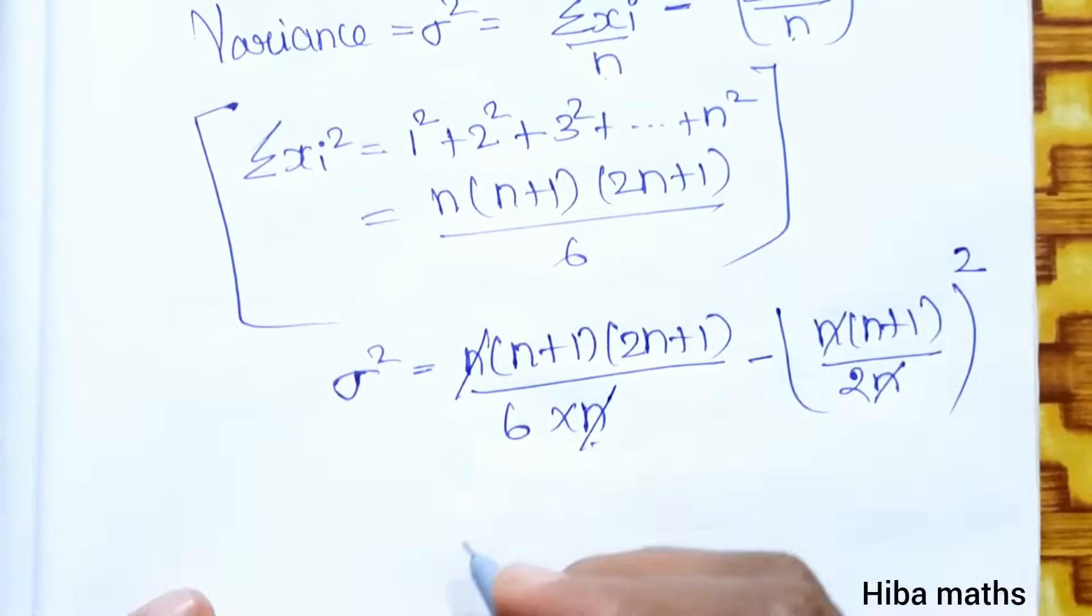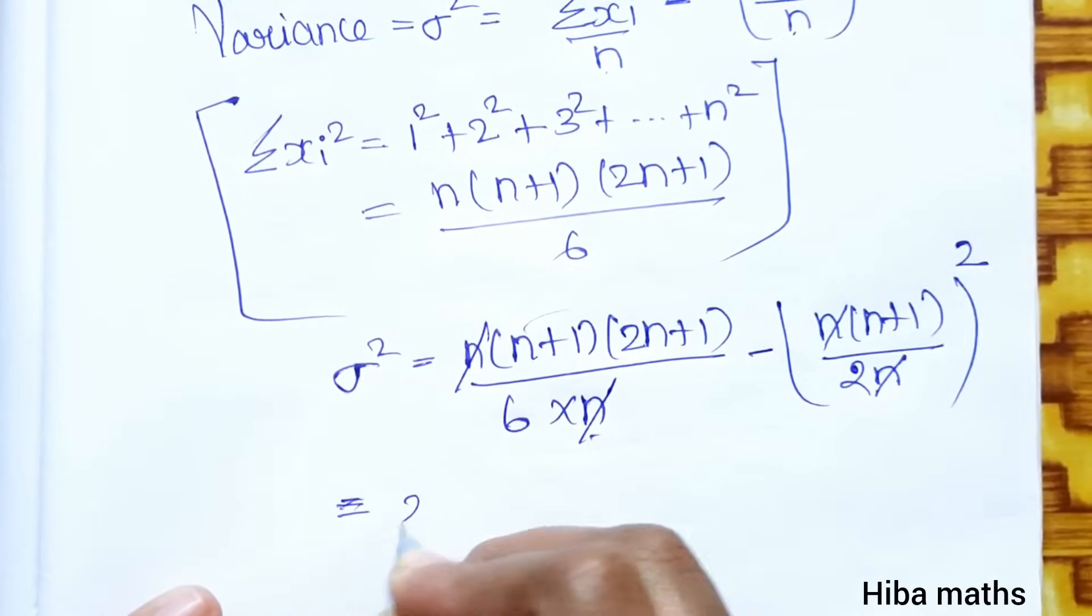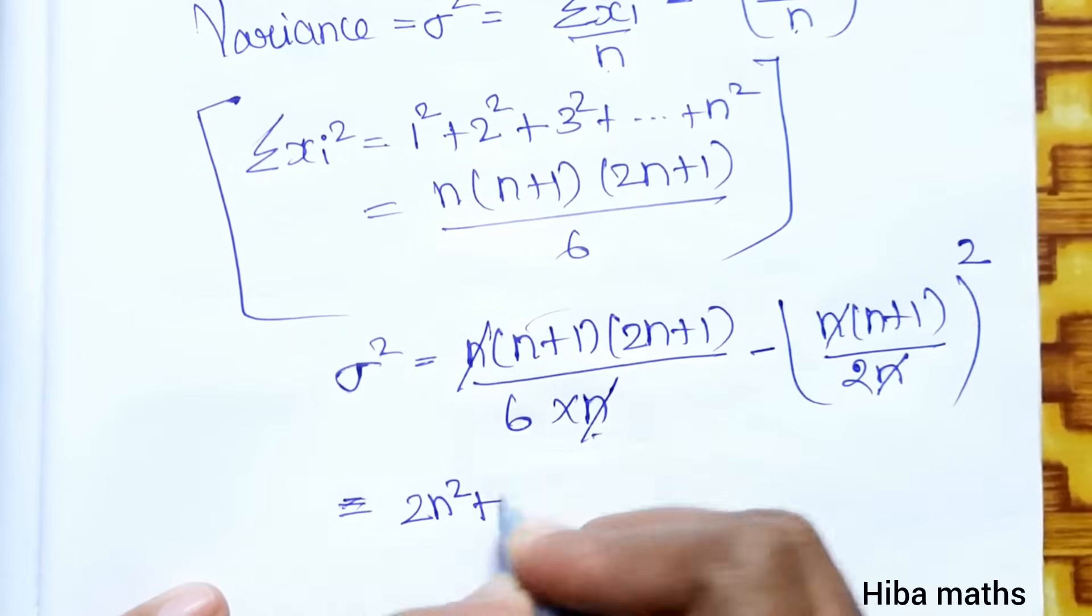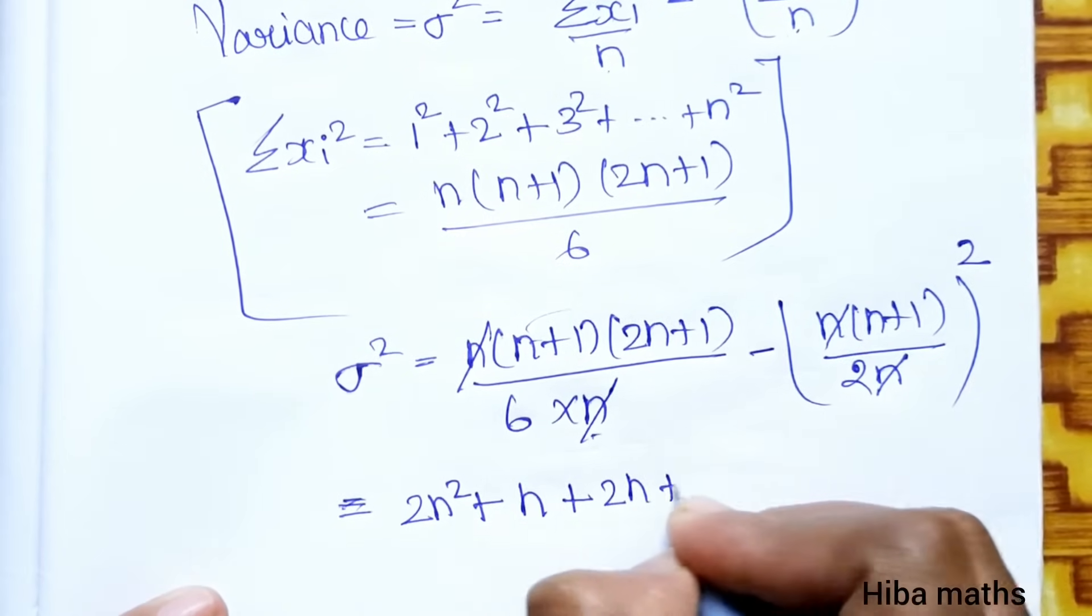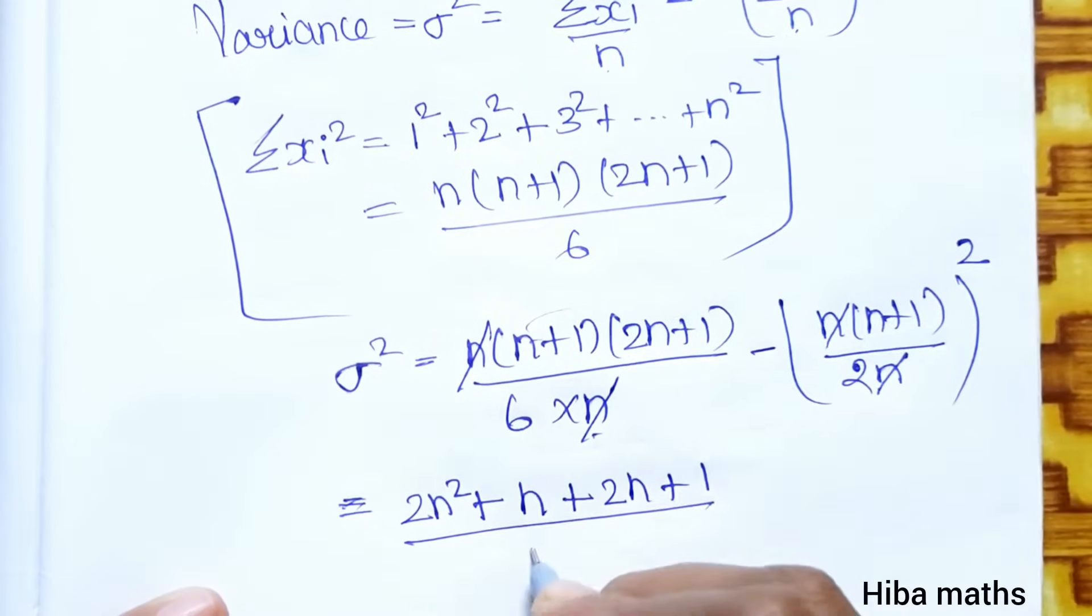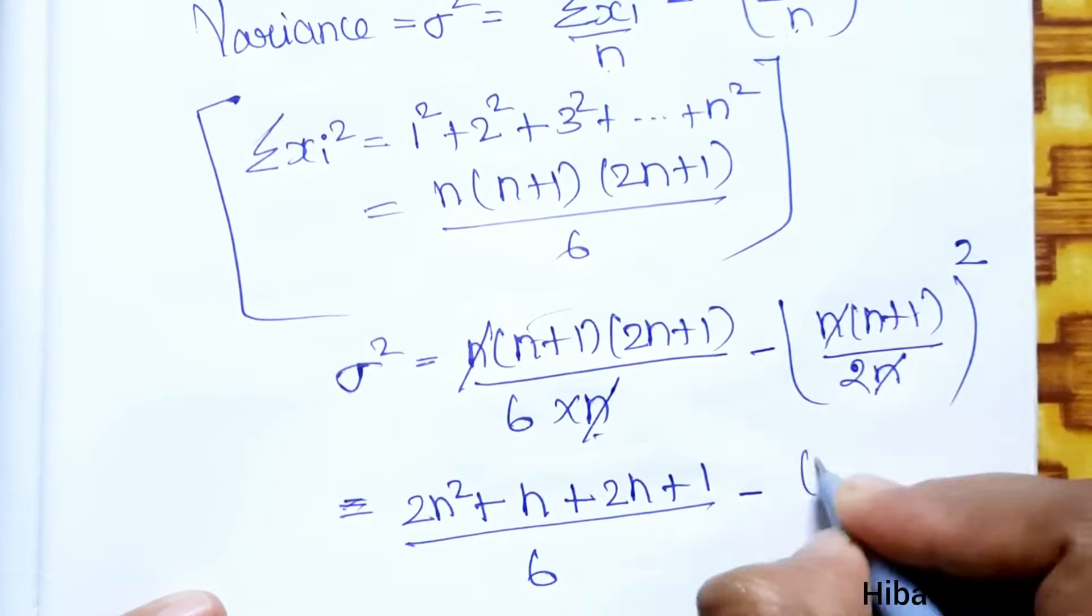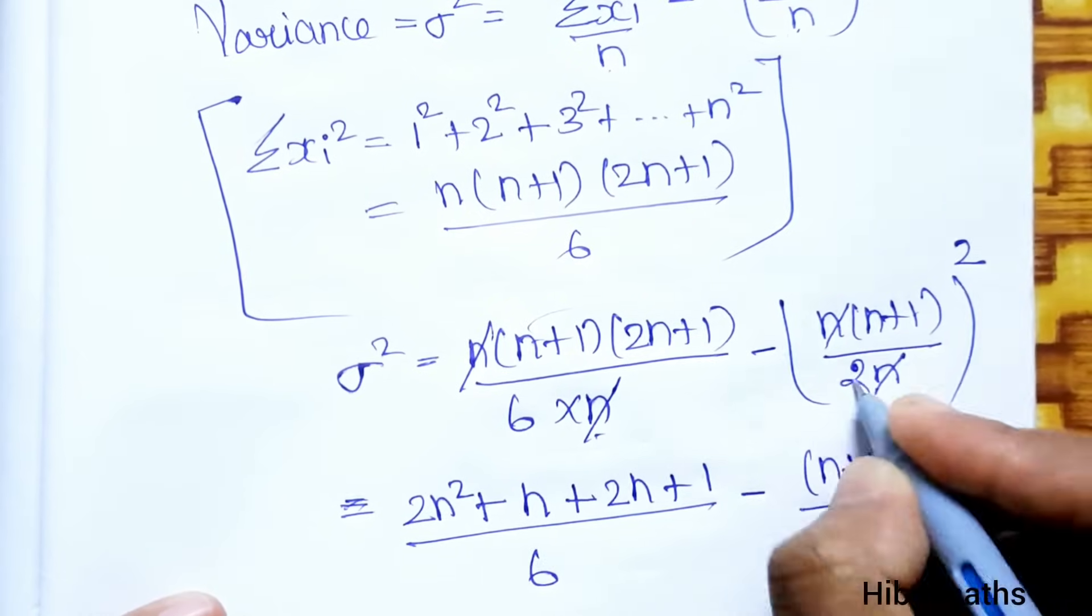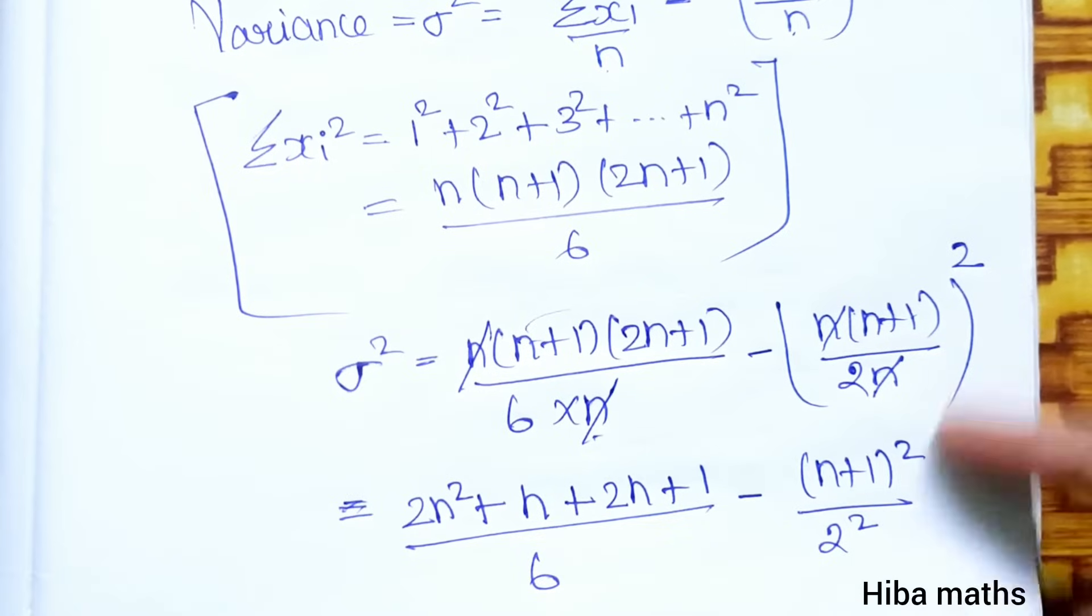n cancel, n cancel, n cancel. Next line, inside multiple n into 2n: 2n square plus n, 1s are n, plus 1 into 2n, 2n, plus 1, 1s are 1, divided by 6, minus n plus 1 square divided by 2 square. One line but confused now.